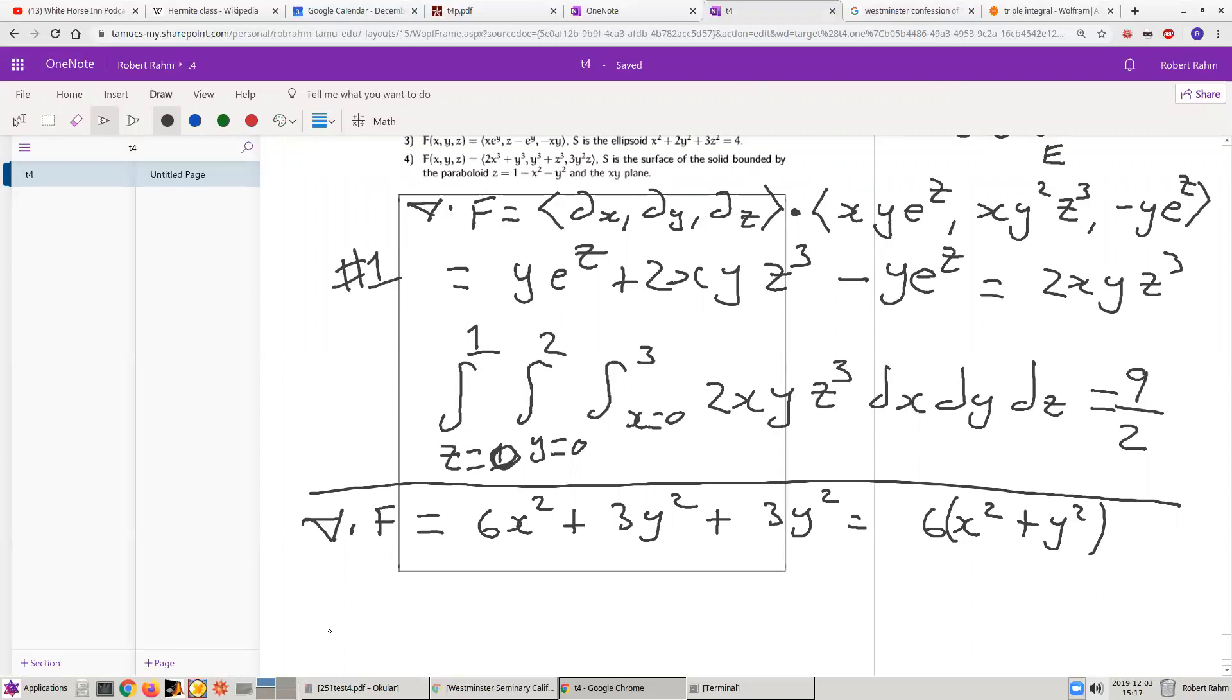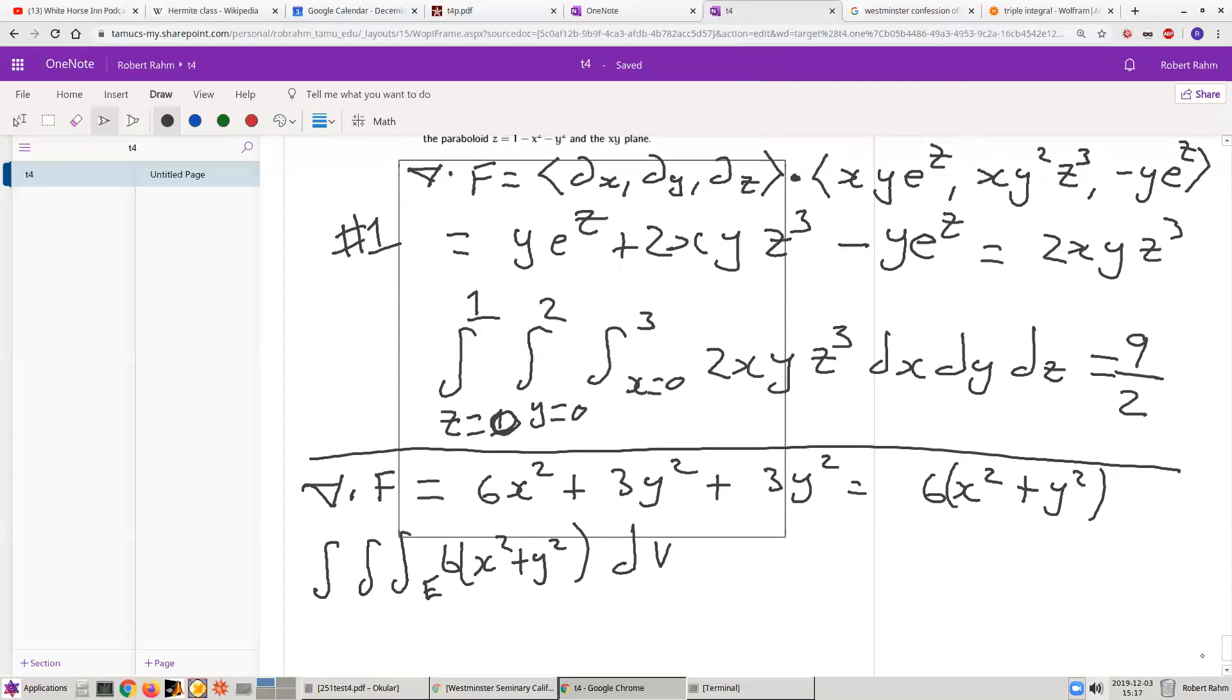So we're going to do this. So the integral that we want to compute is 6x squared plus y squared dv. But we're integrating a paraboloid over a circular region. So we're integrating a paraboloid here. And so we should be using cylindrical coordinates. Okay, this is just like an integral from the last test that we have.